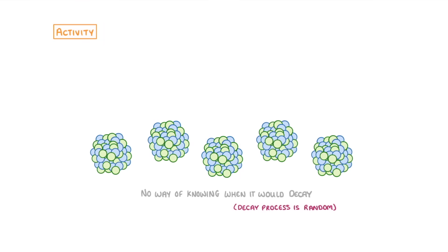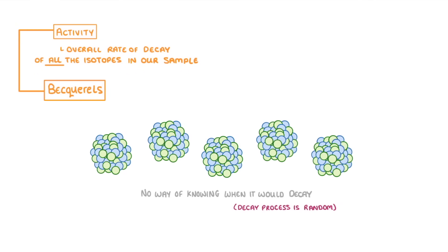One is the activity of the sample, which is the overall rate of decay of all the isotopes in our sample. We measure activity in becquerels, where one becquerel represents one decay per second. So if a sample had an activity of 600 becquerels, then there must be 600 isotopes decaying each second in that sample.